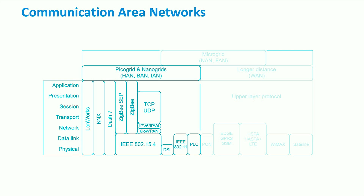The home area network is responsible for gathering the consumption data and controlling smart appliances within each apartment. This task is usually done by a home energy management system and home automation systems. The home energy management system includes graphical user interfaces where the consumer can track their consumption, and also includes supervisory control and data acquisition systems to save information.